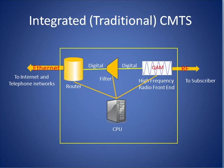First, let's review what the older generation or integrated CMTS looks like. A CMTS can be thought of as three parts: a router, a filter, and a high-frequency radio front end.